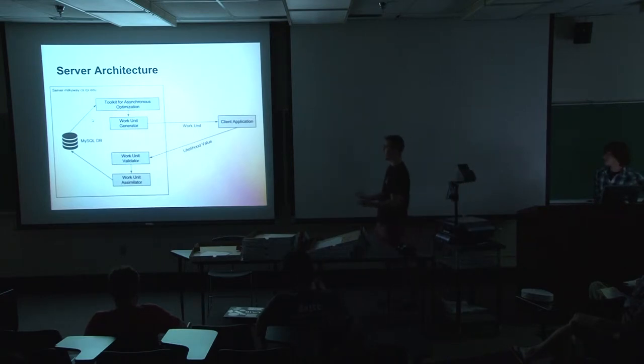So going over this slide real quickly, the TAO for short, toolkit for asynchronous optimization, generates the parameters, sends those to the work unit generator. The work unit is then sent to the client application. The work unit includes the executable, the parameters used for that particular run, as well as any files that you need to compute the likelihood value. The client runs that. They can take from 10 minutes to a couple hours to run one work unit. That sends back a likelihood value, which is right now a single floating-point number, which corresponds to how well those parameters fit our model.